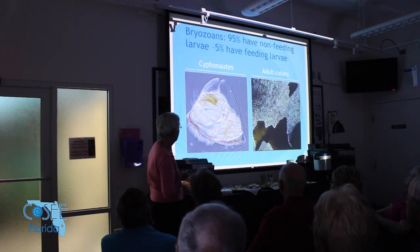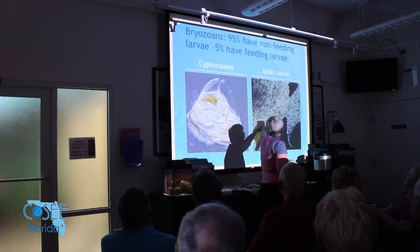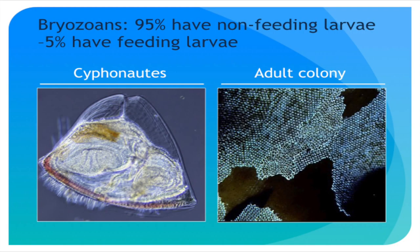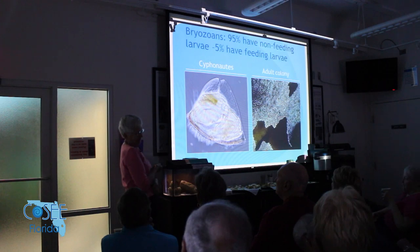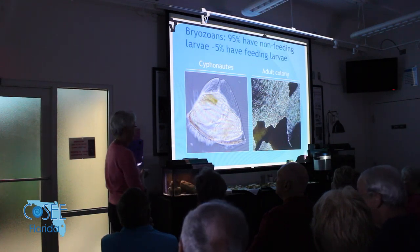Each individual in the adult colony would be about half a millimeter long, and there can be thousands of them in a single colony, all connected by pores that allow food transfer. I'll talk about bryozoans in more detail another time.